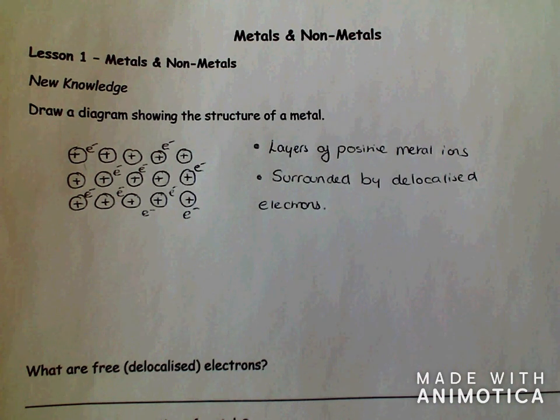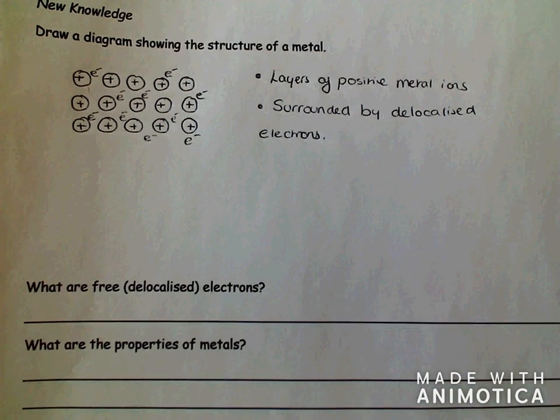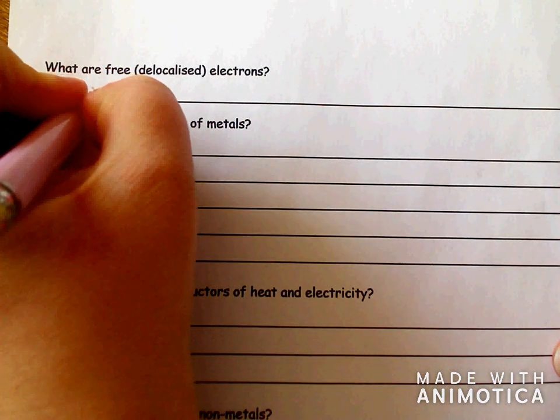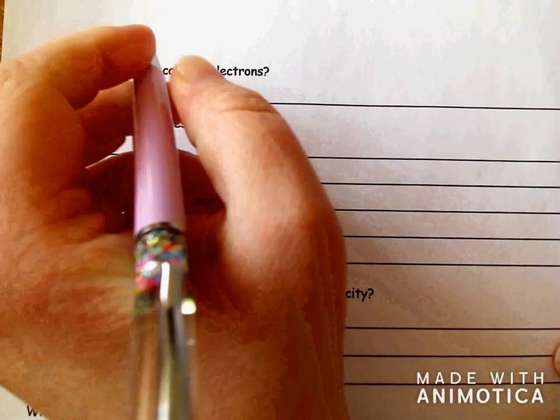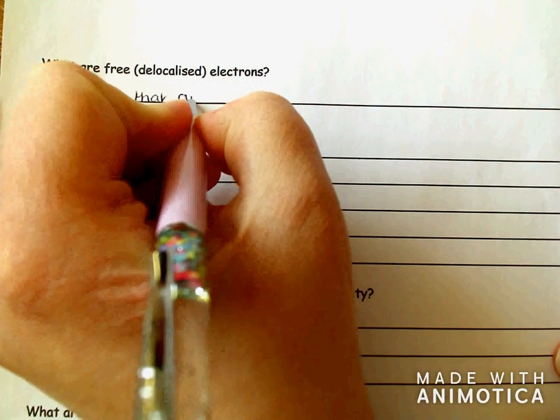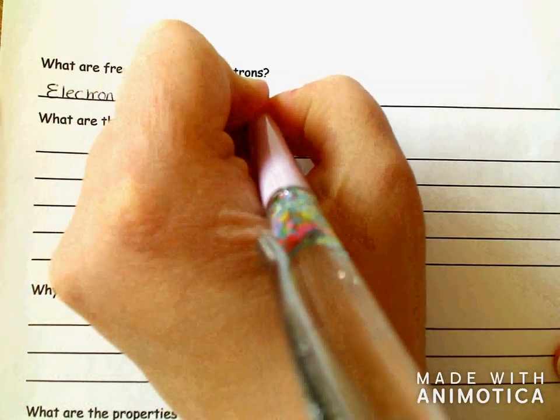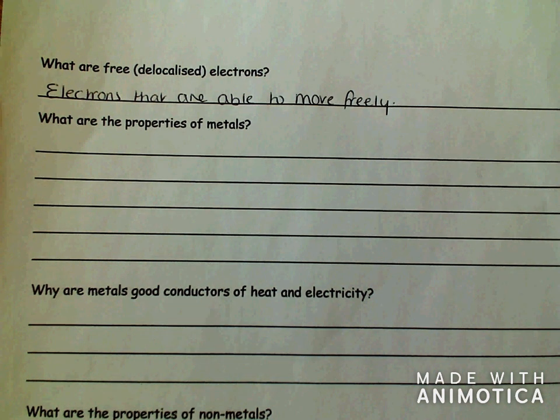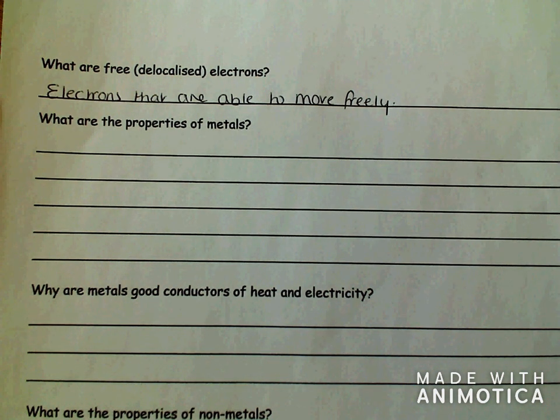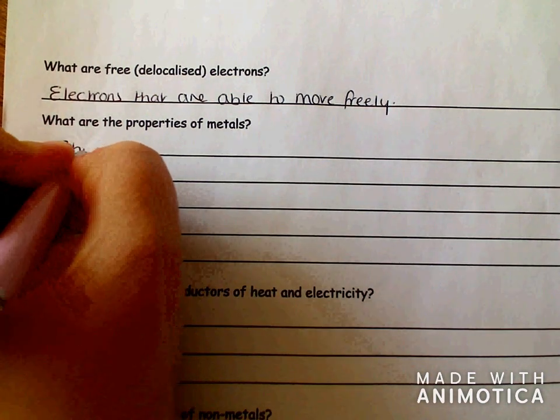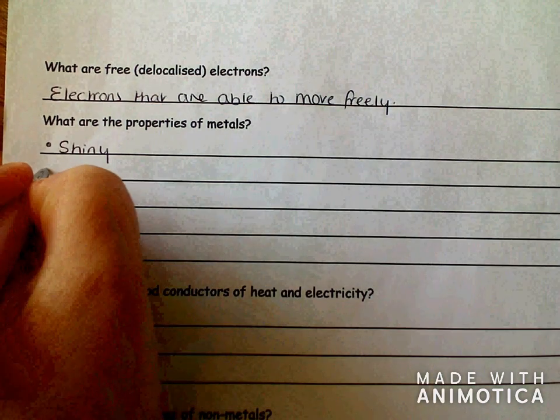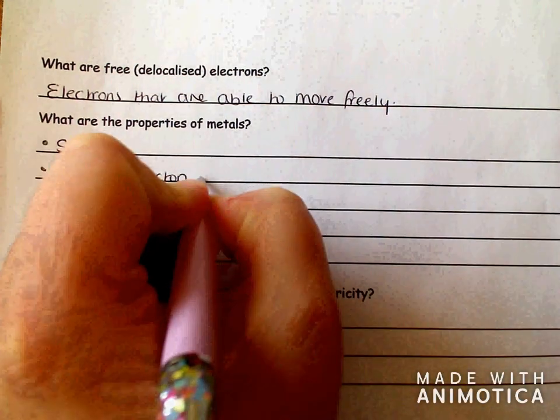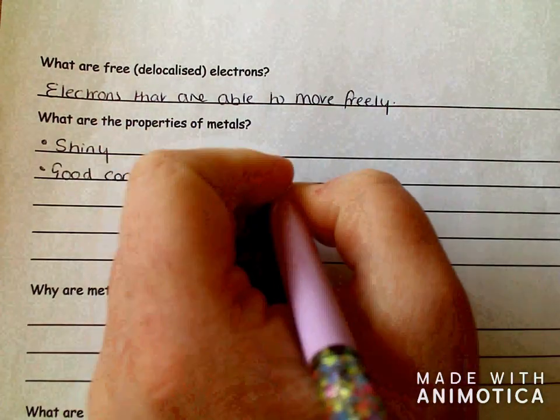Now we're going to have a look at the properties of metals. So first, what are free delocalized electrons? Let's write the following. Electrons that are able to move freely. So they can zip round that metal. What are the properties of metals? First, shiny. Next, good conductors of heat and electricity.